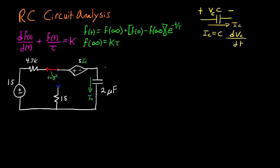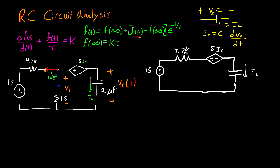With this in mind, let's apply this to an example problem and solve for the capacitor voltage vc of t, and also for the voltage v1 across the 15 ohm resistor. The first step is to find the initial condition. I need to find the initial voltage across my capacitor by analyzing the circuit in steady state when the switch is in the first position, redrawing the circuit for time less than zero. We're assuming the switch has been in this first position for a long time and everything has reached steady state.